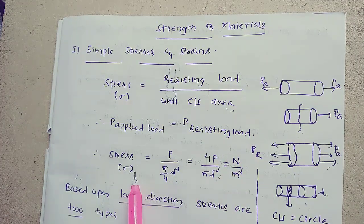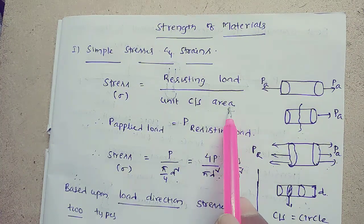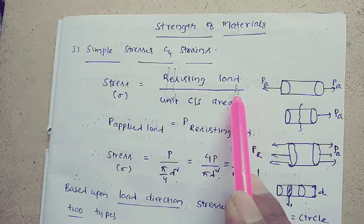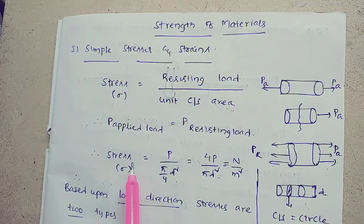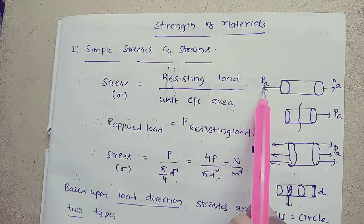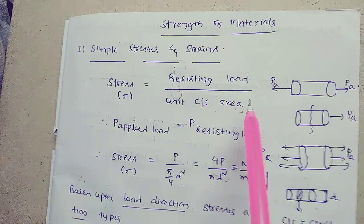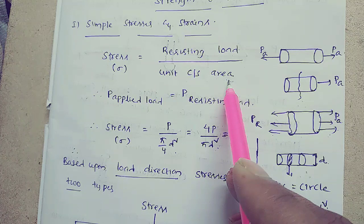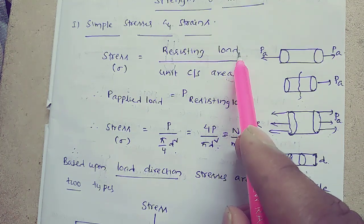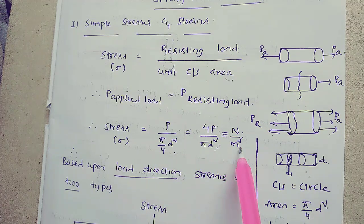Many people think load, force, and resistance load are different — but they are all the same. Stress equals load divided by area. Load is a force, and its unit is Newtons; area is in square metres. Therefore, the unit of stress is Newton per square metre (N/m²).